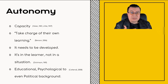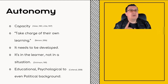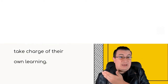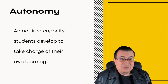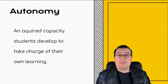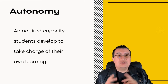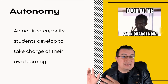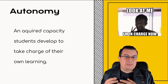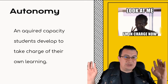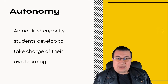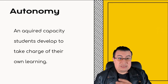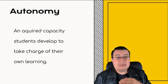So if I combine all of this, my core concept of autonomy is going to look more or less like this. I know it looks really short — that's why I told you it's the core definition. For me, autonomy is an acquired capacity students develop to take charge of their own learning. However, take charge means more than just telling students they're in charge and can do whatever they want. It has real implications.